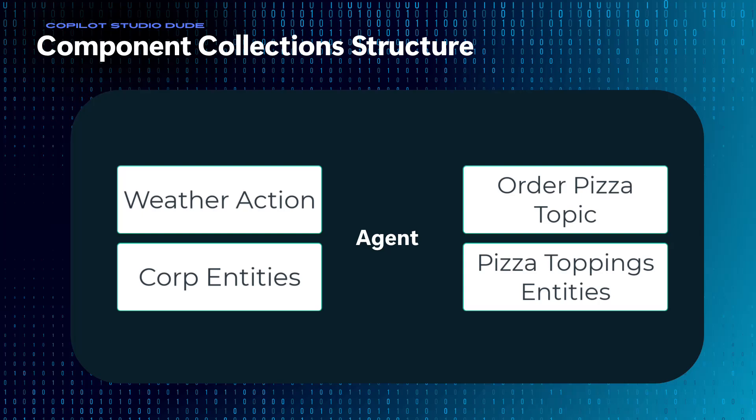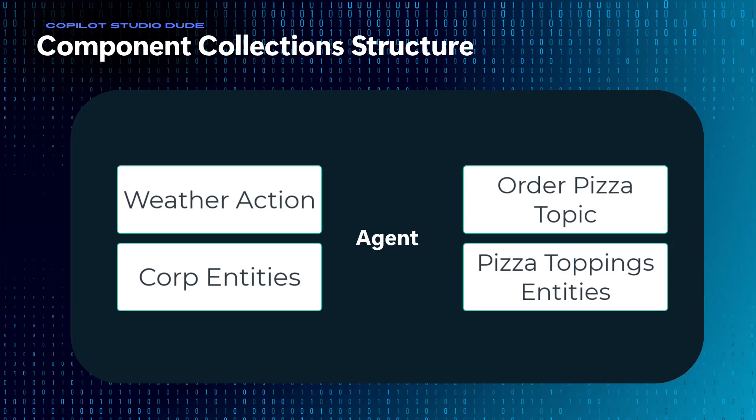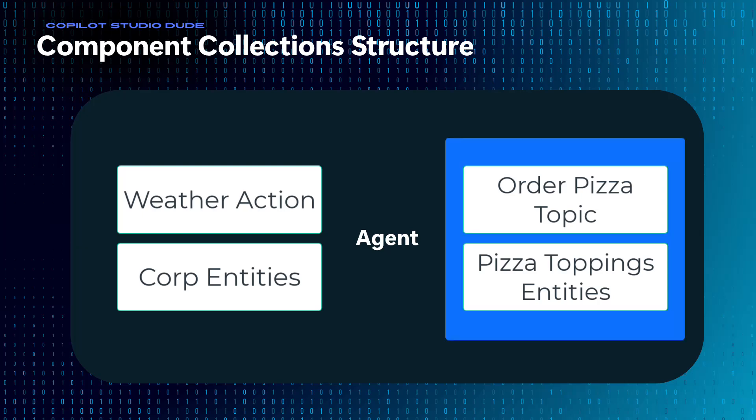To do this, the first thing I need to do is look at what are all the pieces of this agent that need to be packaged up into this new component collection. The two things I would need are the order pizza topic, but I would also need the pizza topping entities, so that I have all of this together. So I'll take the two of those and put them into a collection together. By doing that, I now have a component collection that I can use and redistribute — my pizza ordering topic and the entities associated to it.